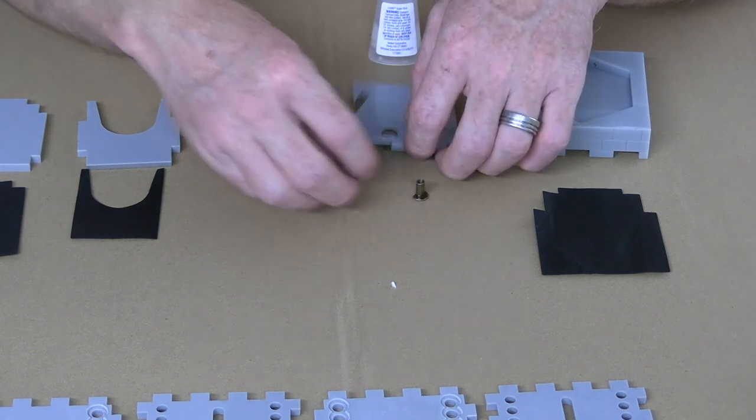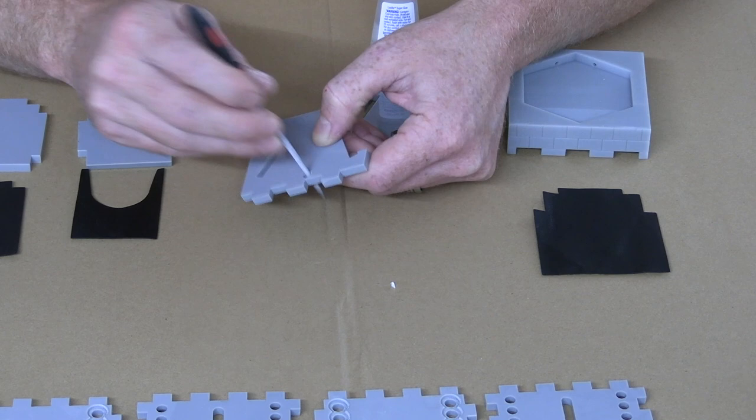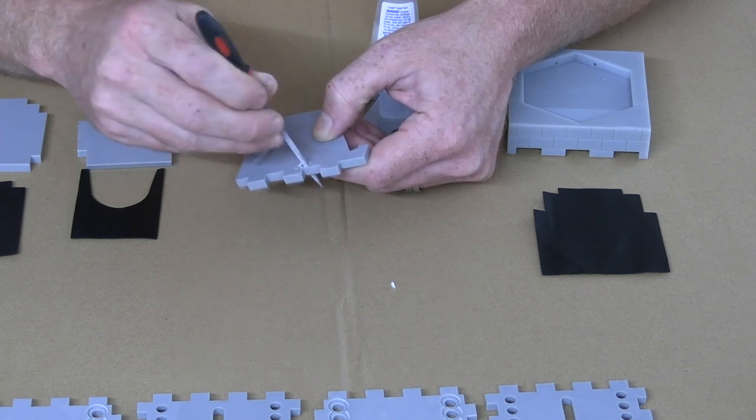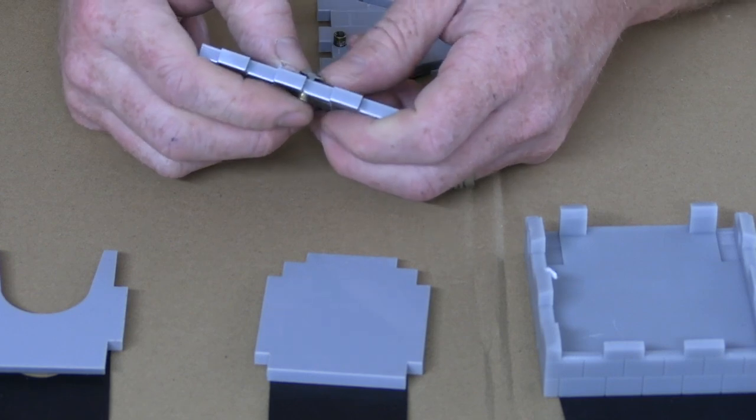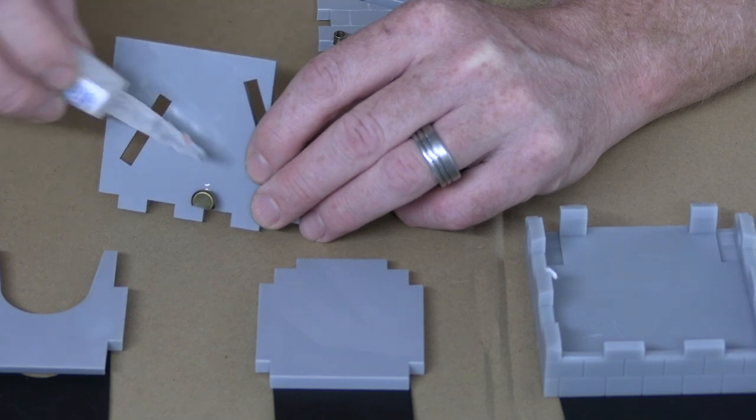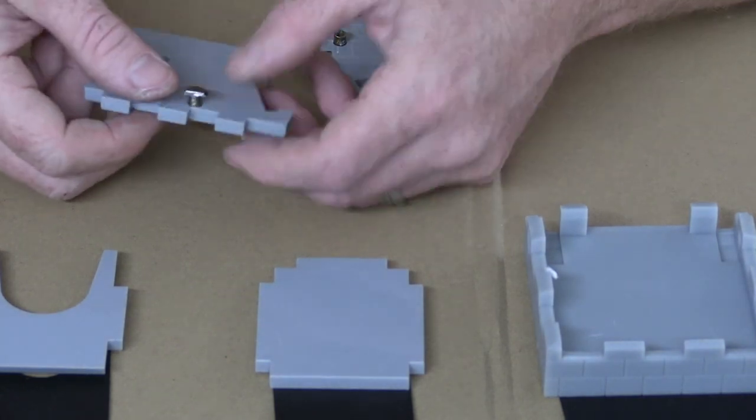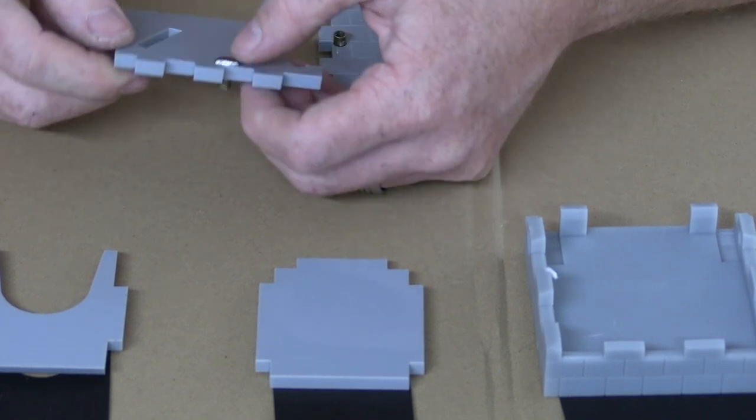Test fit them first, and if you encounter any resistance at all, use a file or small drill bit to clean up the holes. They need to move back and forth freely because we're going to be gluing them in with super glue, and super glue sets up nearly immediately. It's important that the head of the screw is seated fully down against the acrylic so that enough of it protrudes out the other side.